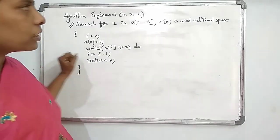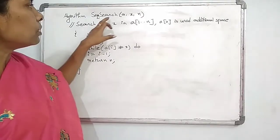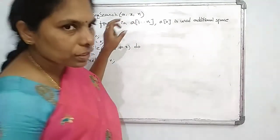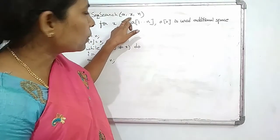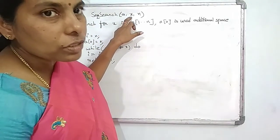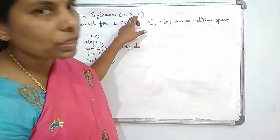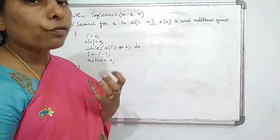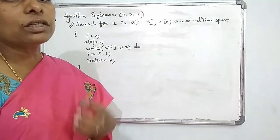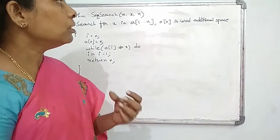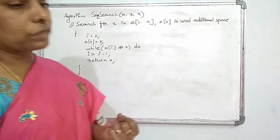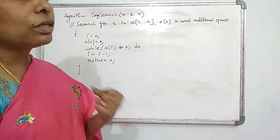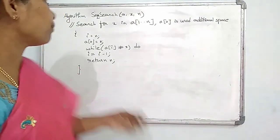The algorithm for sequential search is: Sequence Search of A, X, N. A represents the array of elements. X represents the element you want to search. N represents the number of elements. Within the array of elements, you can find out whether that element exists or not. The sequential search means you sequence through each and every element to check if it exists.